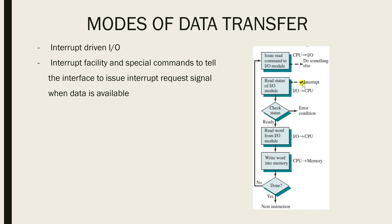After issuing the read command, an interrupt mechanism monitors the I/O module and reports status to the CPU, allowing the CPU to be involved in other activities in the meantime. When the I/O device is ready, it sends its status and generates an interrupt request to the CPU. The CPU then checks the status — if ready, it reads the word from I/O and writes the word to memory. If done, it moves to the next instruction; if not done, it reissues the read command.